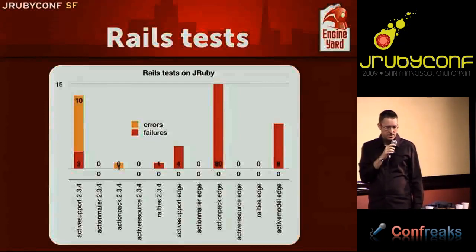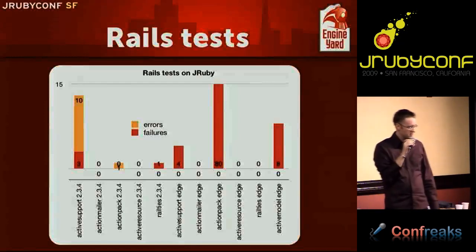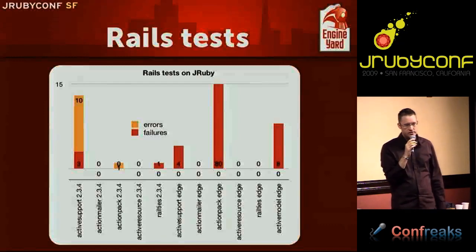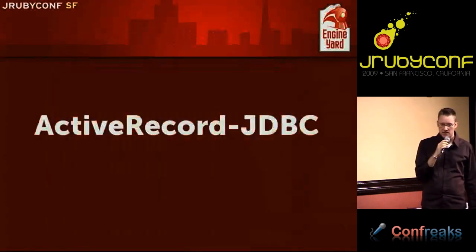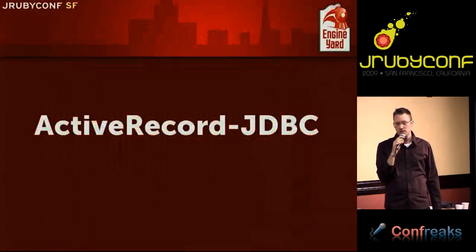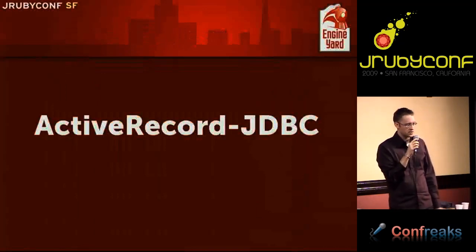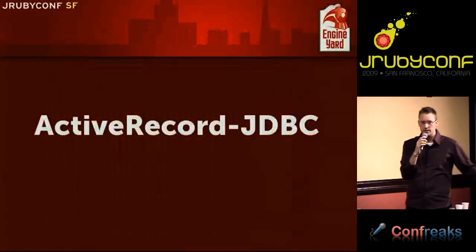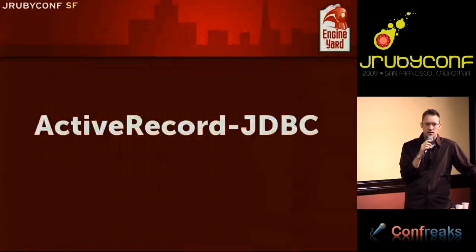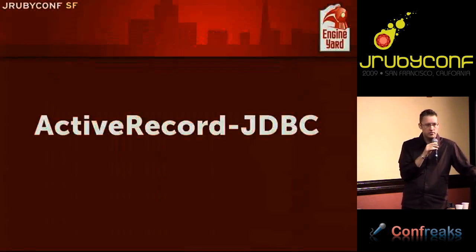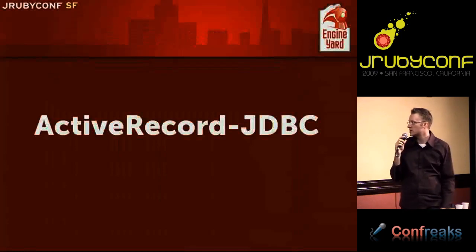Next we move on to ActiveRecord JDBC — the ActiveRecord adapter that allows you to talk to databases using Java's JDBC interface. We started working on this way back in 2006 around the time we first started running Rails, writing Ruby code that used JRuby's Java integration to talk to JDBC and write an ActiveRecord connection adapter. We've been steadily developing that library ever since.